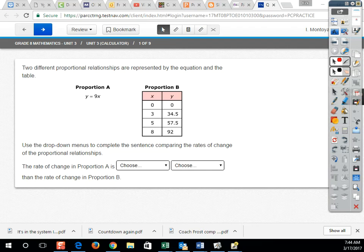We're going to take a look at the first question in the 8th grade PARCC Practice Test, Unit 3. Two different proportional relationships are represented by the equation and the table. So you have Proportion A, which is Y equals 9X, and Proportion B, which is given in a table.